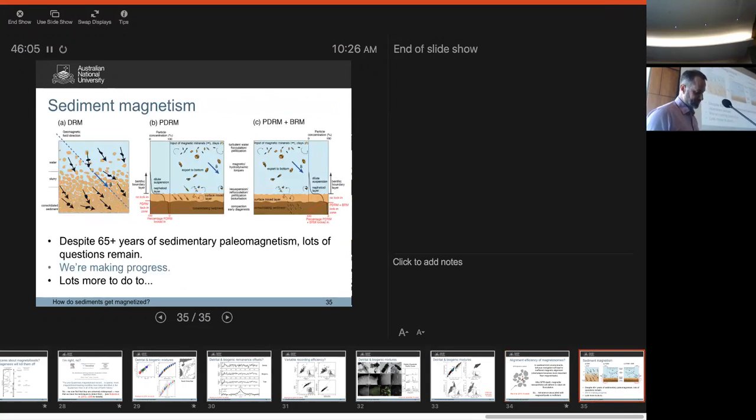I want to wrap up. I would argue that despite 65-plus years of sedimentary paleomagnetism, there's still a lot of questions. I think we're making progress. I still think there's a lot more to do. We need to demonstrate how sediments are magnetized. The PDRM concept has taken on some damage. And if it's real, we need to test it properly and do a whole lot more work. So that's a quick snapshot of my sense of play on the subject, and I'd be delighted to take questions.